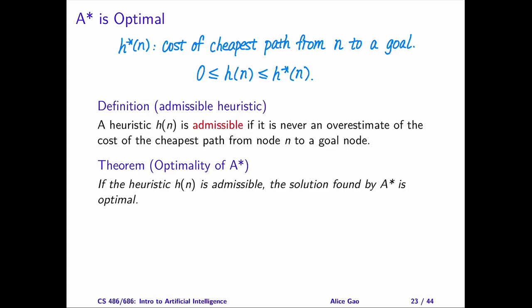We can think of an admissible heuristic in several ways. An admissible heuristic value for any node n is a lower bound on the cost of the cheapest path from the node n to a goal node.